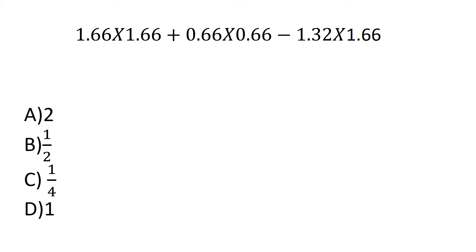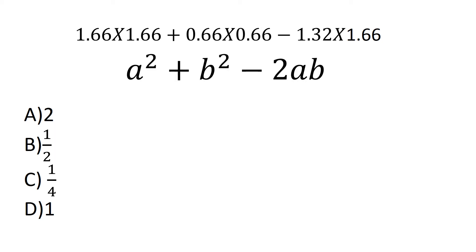This is the format: A squared plus B squared minus 2AB. The formula A minus B whole square is a standard formula. A minus B, A plus B is easy to solve using the A minus B whole square identity.